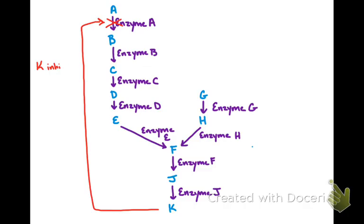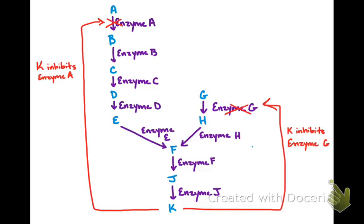It could inhibit enzyme A or enzyme G. Once there is enough product K to start acting as an enzyme inhibitor, K would stop building up in your system because it would stop being created since those enzyme pathways were not active.